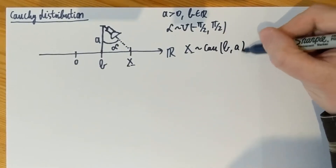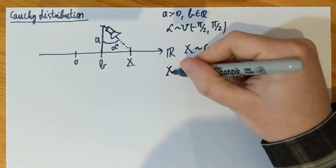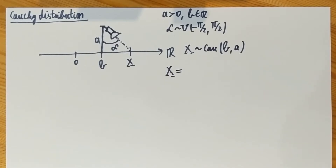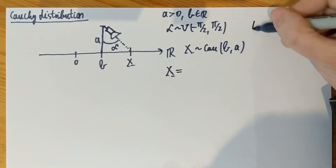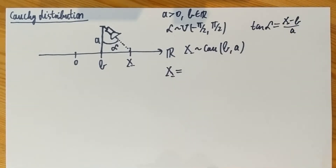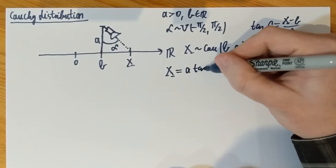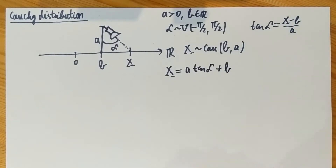The parameters by convention are B first and A second. Now let's find the distribution function and the density function for this Cauchy. By geometry or trigonometry, X minus B over A is going to be the tangent of alpha. So X is going to be A times tangent of alpha plus B, where alpha is the uniform random variable. Notice that when alpha is between minus pi half and pi half, tangent is a strictly increasing function with limits minus infinity and plus infinity. So X covers all of the real line.